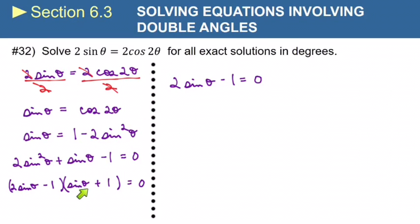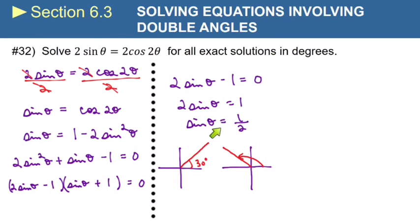Now, if this times this is 0, one of our factors has to be 0. Now, if this first factor is 0, then 2 sine θ equals 1 and sine θ equals 1 half. Positive sine values can happen in either quadrant 1 or quadrant 2. Now, the reference angle whose sine is 1 half is 30 degrees. So in quadrant 1, my angle is 30 degrees. In quadrant 2, my reference angle is 30 degrees, and that means that our θ is 150. So we've got two solutions there, the 30 and the 150.